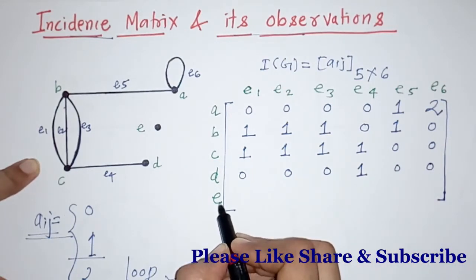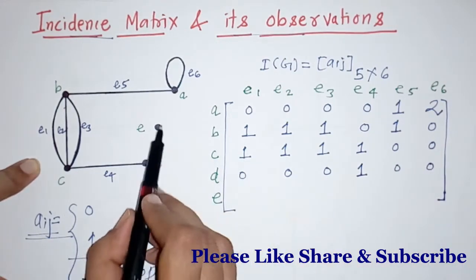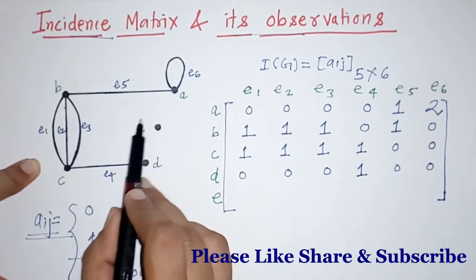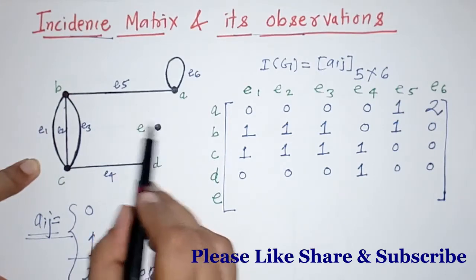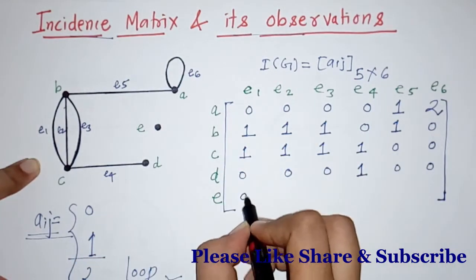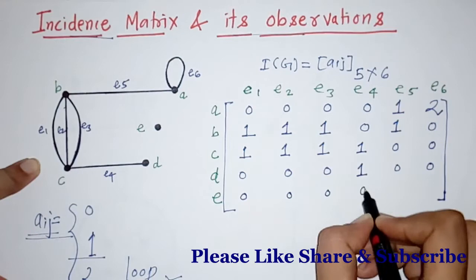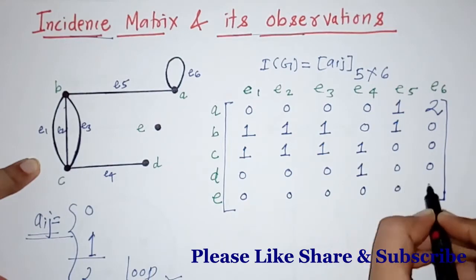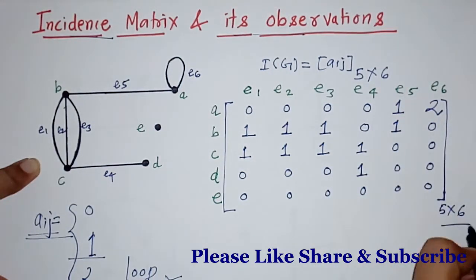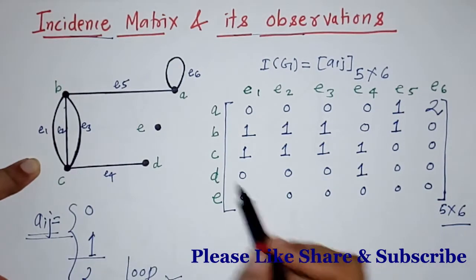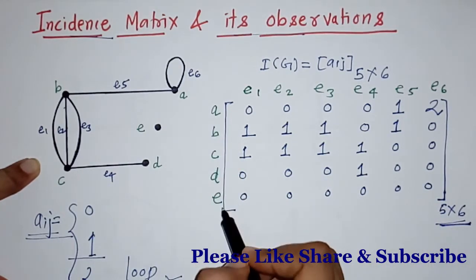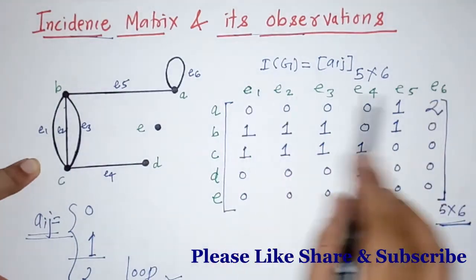Now we check for vertex E. Vertex E is not incident with any edge, so for all edges we write element 0. This completes the incidence matrix for this graph. It is of order 5 by 6, with 5 vertices and 6 edges.